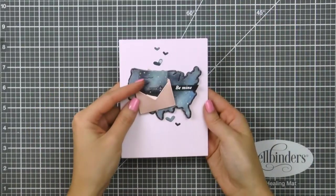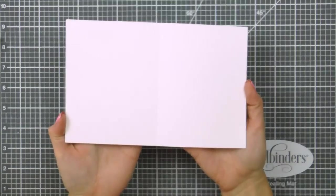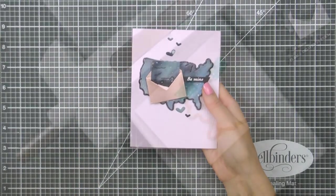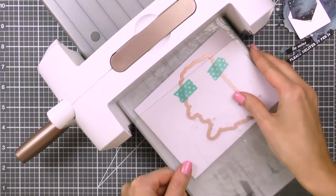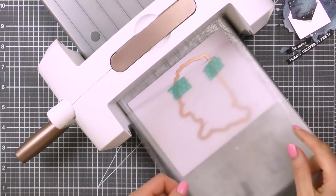As a variation of this design, you can also die cut a door and hide a secret message on your card. Here I have the exact same card design but the map of the United States opens up and reveals a hidden message. Now here's how you can make this.